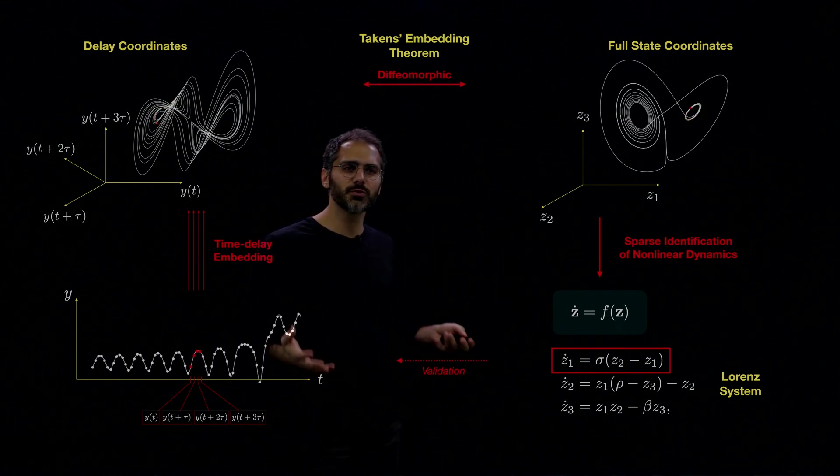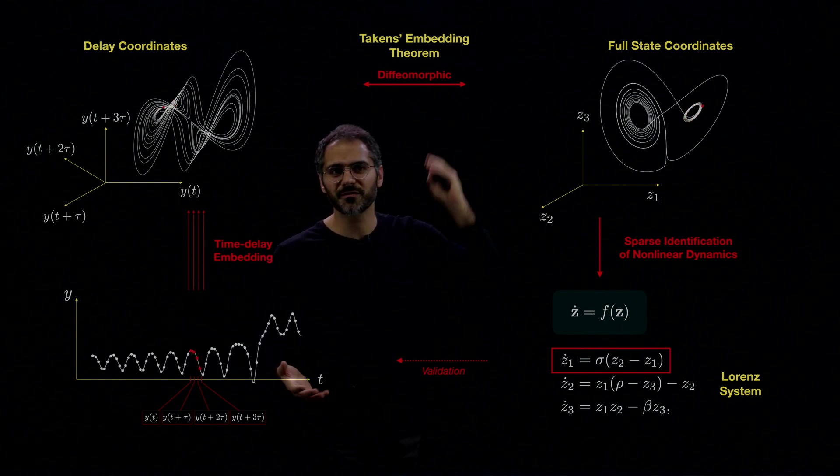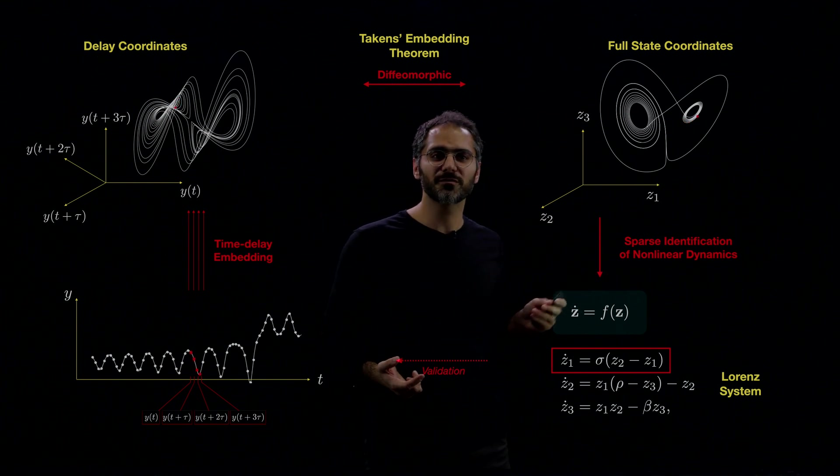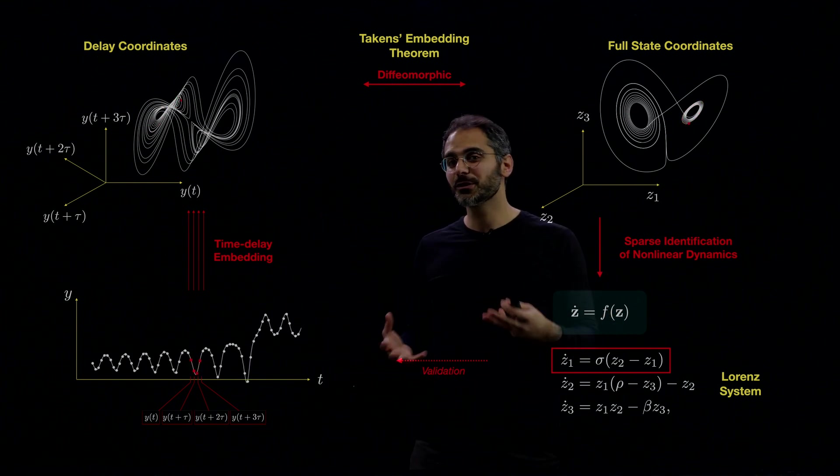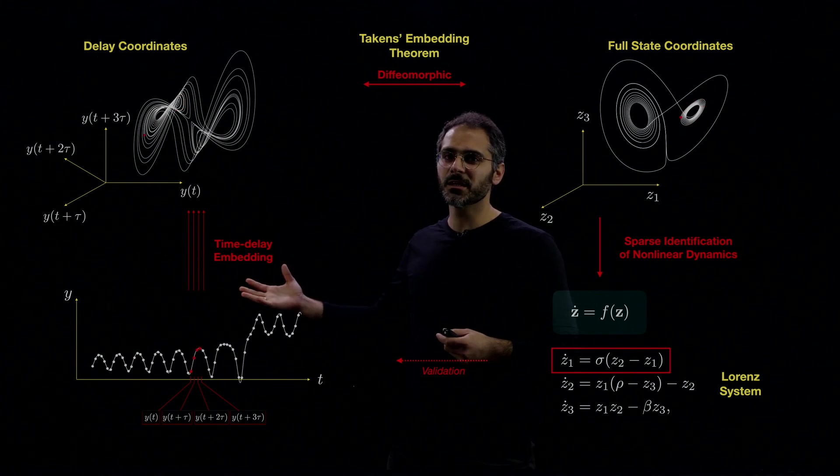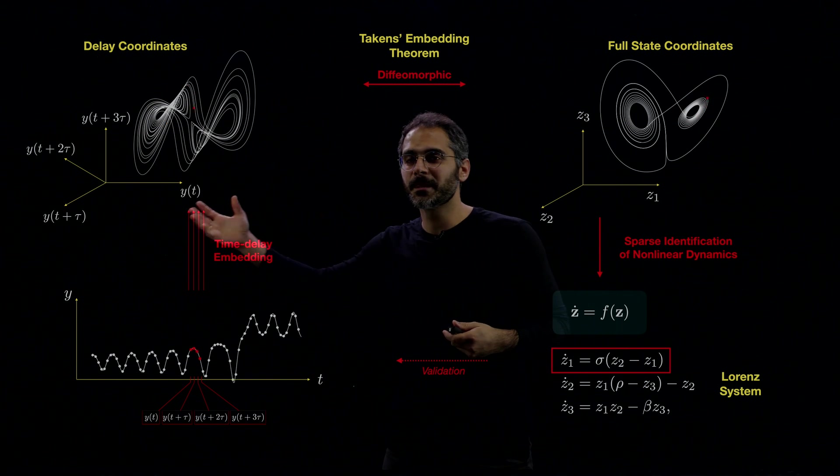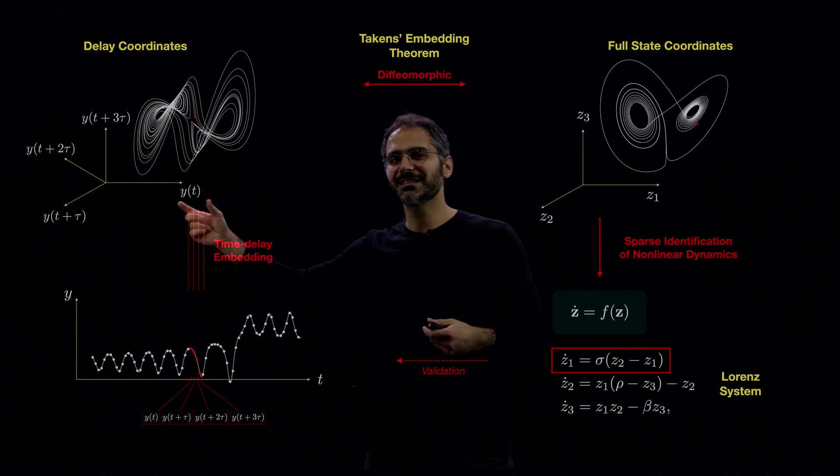So now, how do we actually develop this method? It seems like there are a lot of unknowns. The diffeomorphism is unknown, the sparse identification of nonlinear dynamics is also a machine learning algorithm with unknown coefficients, and the delay embedding, there is no unique way of doing that. The number of dimensions we choose is unknown, and τ is unknown.